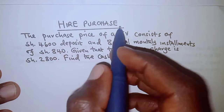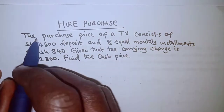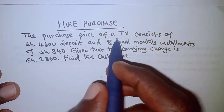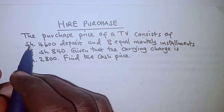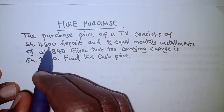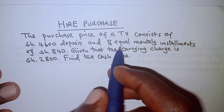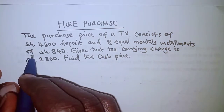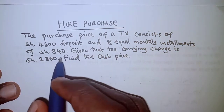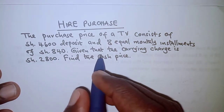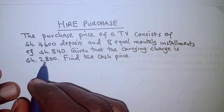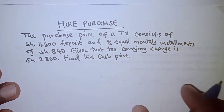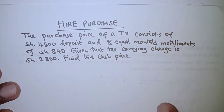The question today is on hire purchase. The purchase price of a TV consists of a 4,600 shilling deposit and 8 equal monthly installments of 840 shillings. Given that the current charge is 2,800 shillings, find the cash price.